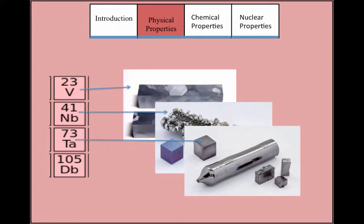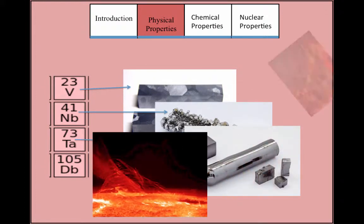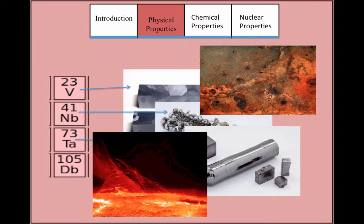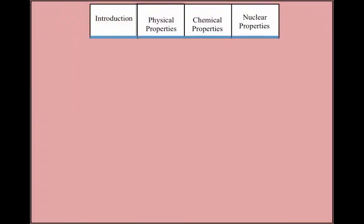Because vanadium, niobium, and tantalum are refractory elements, they have a high resistance to heat and corrosion. Their boiling points range from 3,000 to 6,000 degrees Celsius and melting points range from 1,000 to 3,000 degrees Celsius.